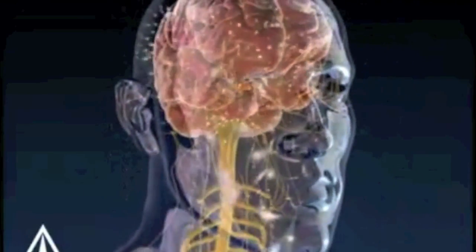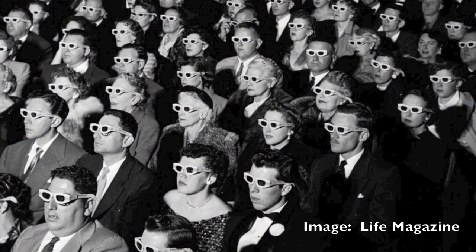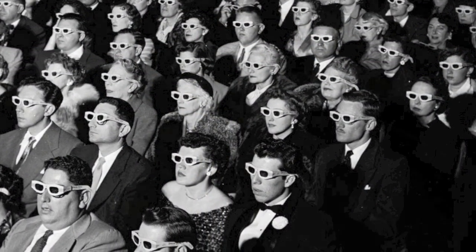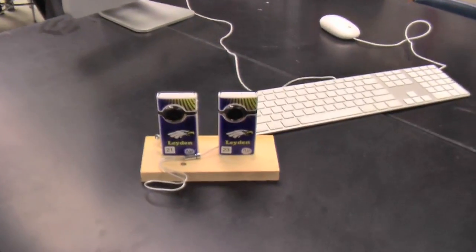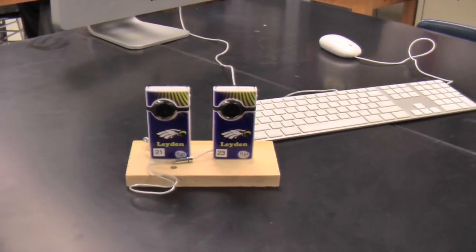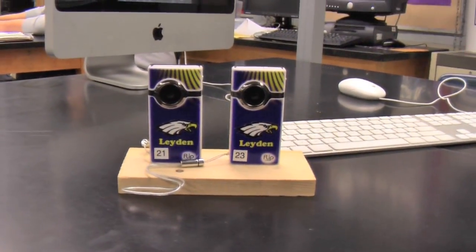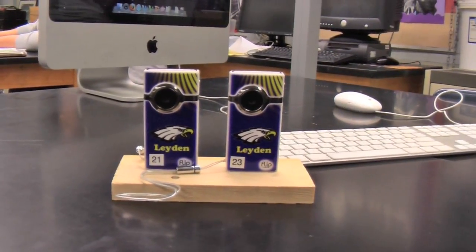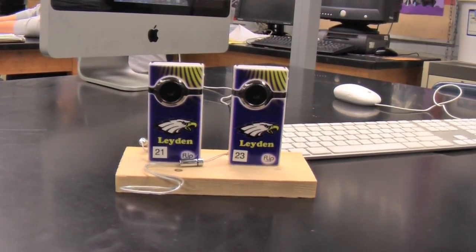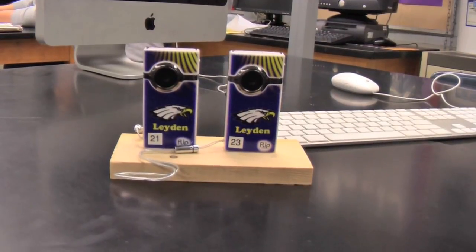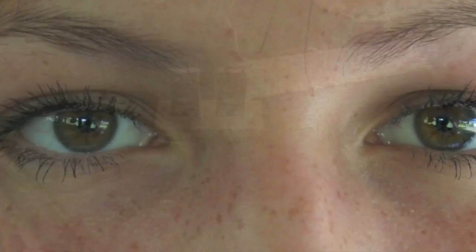We can recreate this with simple movie-making equipment so that we can see something in 3D on a computer or television screen. The first thing we will need is two slightly different views of the same scene. We will use two different cameras mounted into a piece of plywood with the lenses at a distance of about 2.5 inches apart, which is close to the average distance between the pupils of an adult.